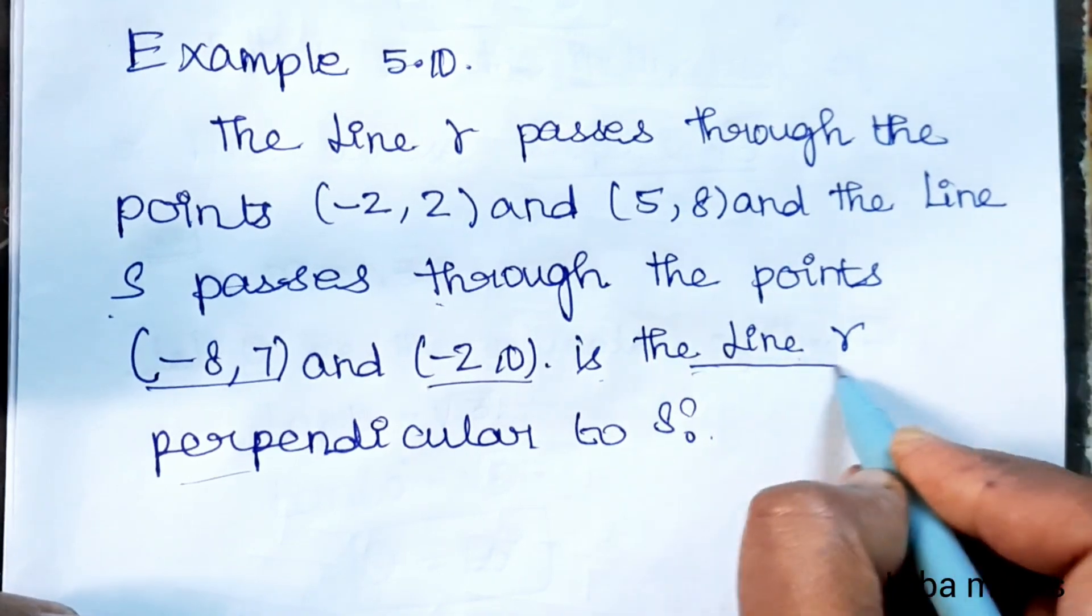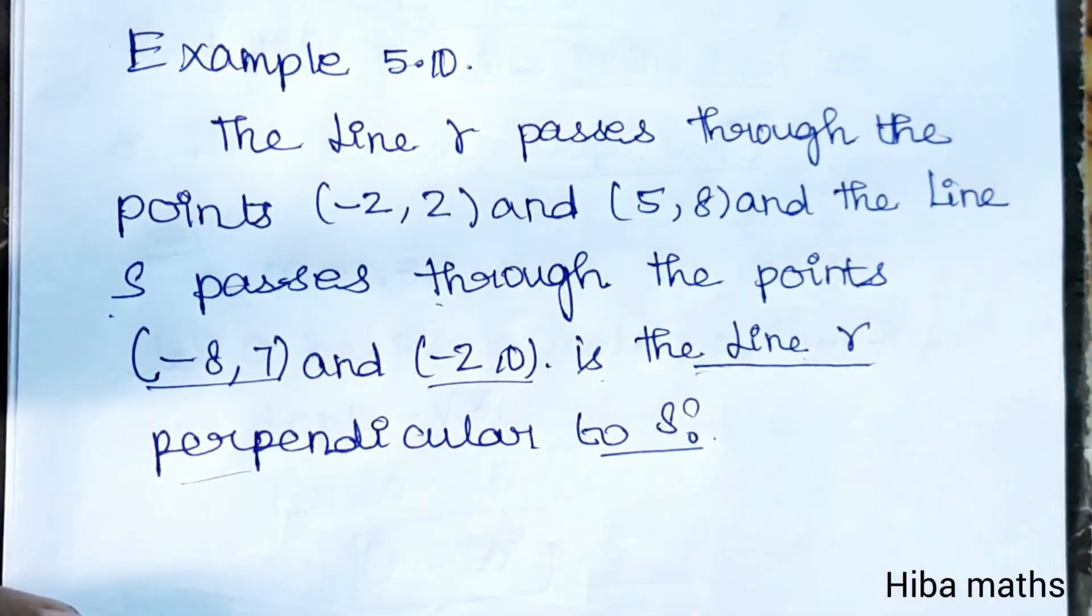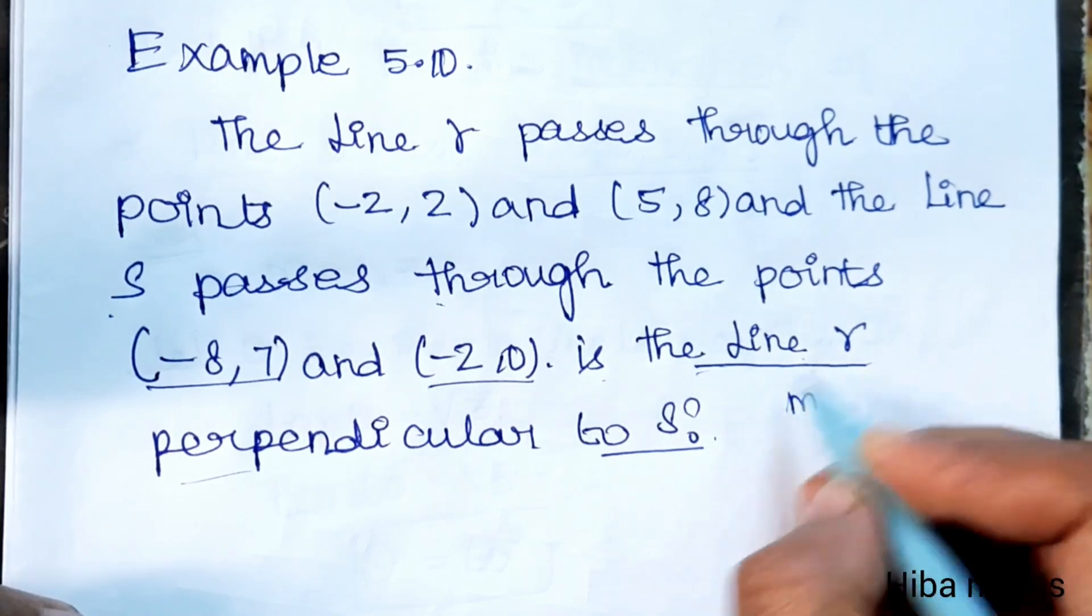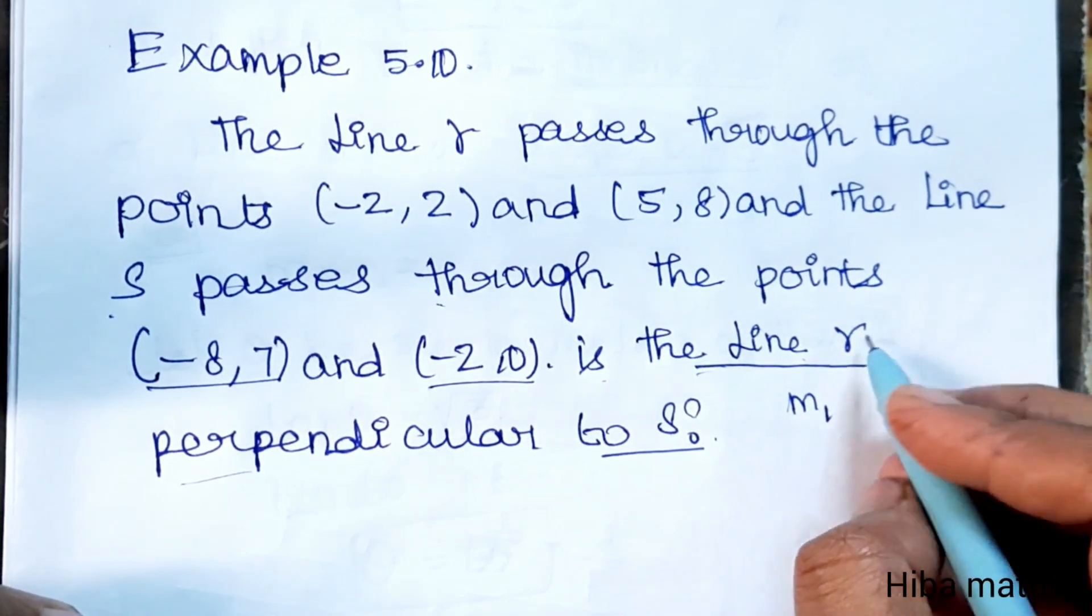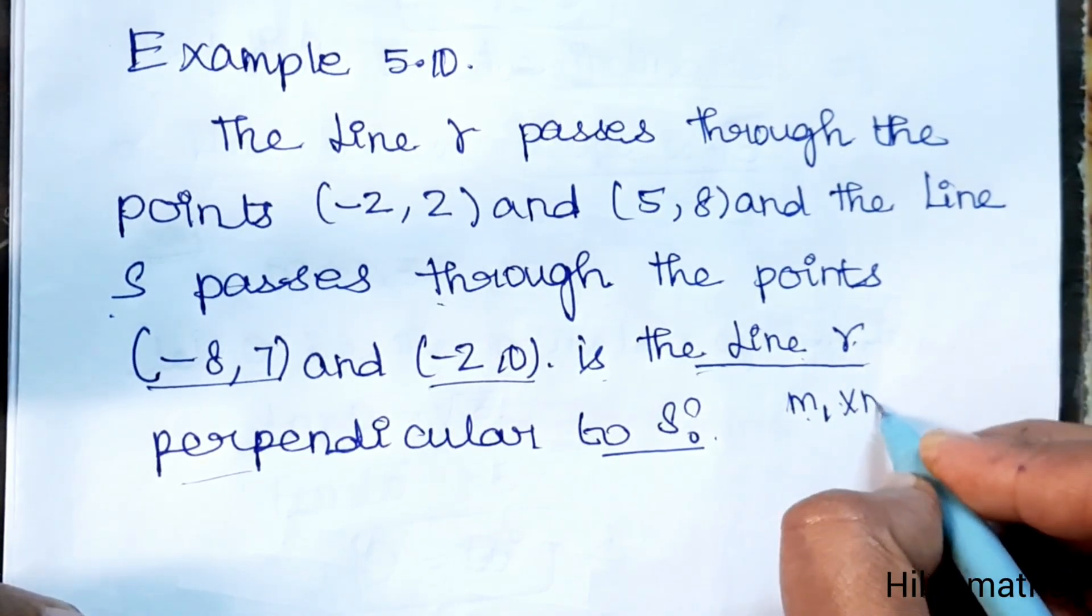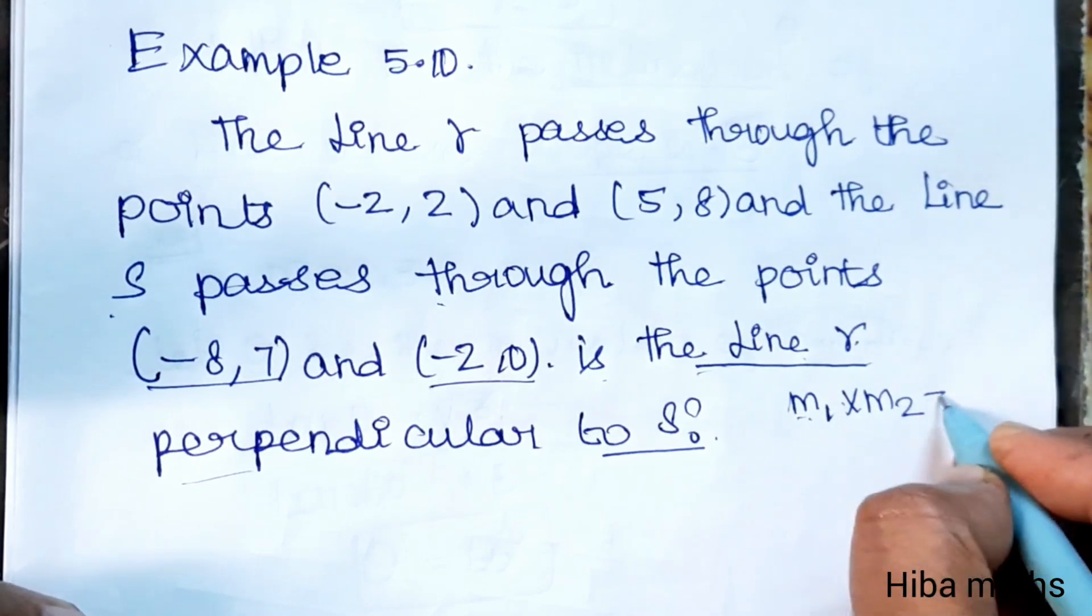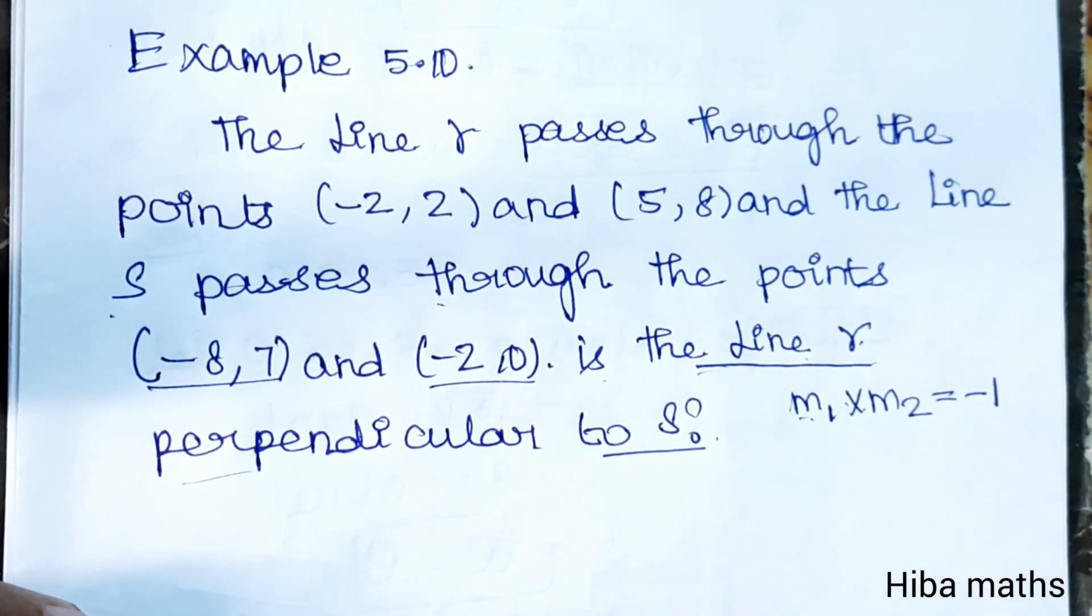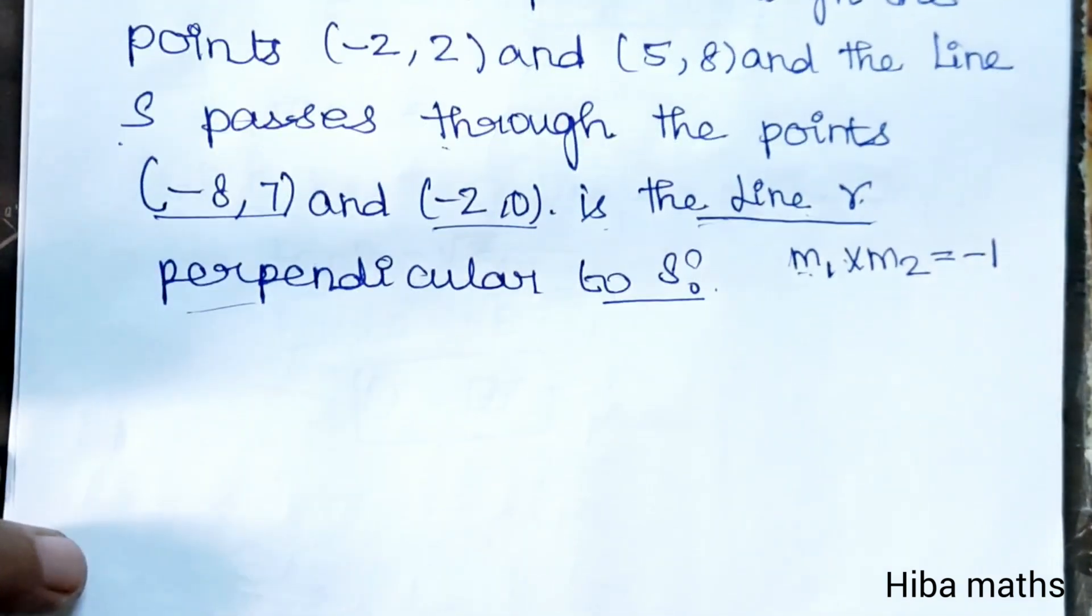So are lines R and S perpendicular? To check this, we need to find the slopes of the two lines. Line R has slope M1 and line S has slope M2. If their product M1 times M2 equals -1, then R is perpendicular to S.